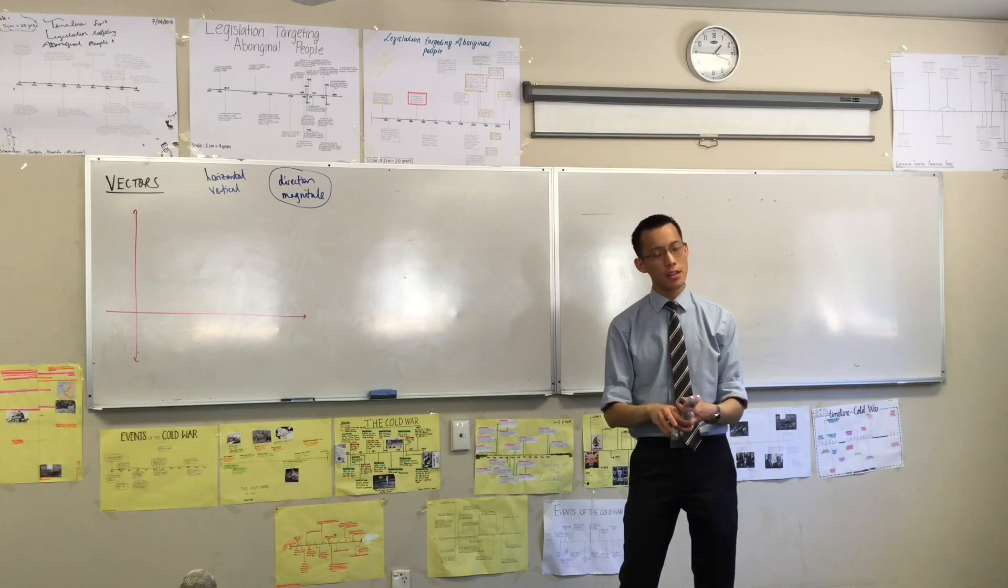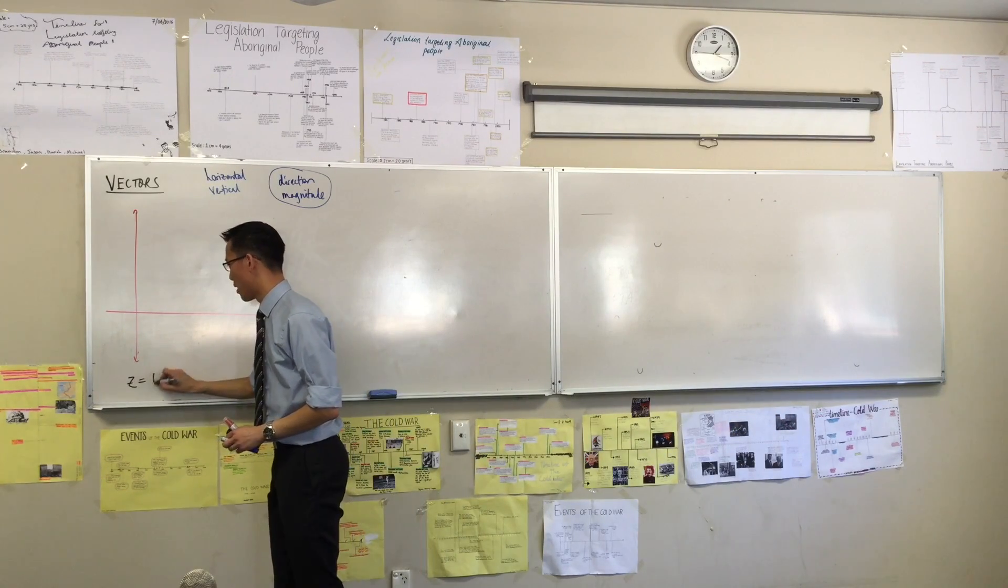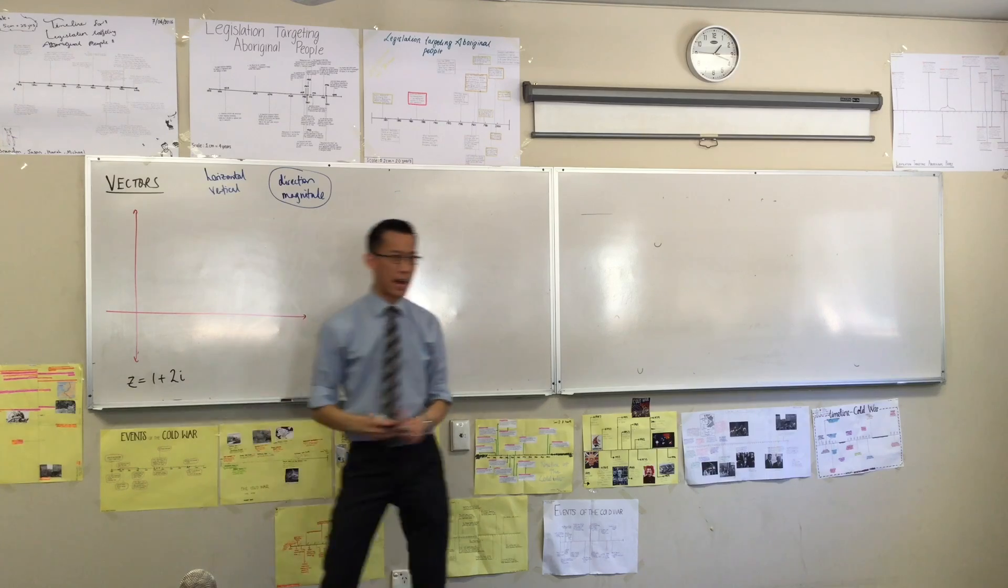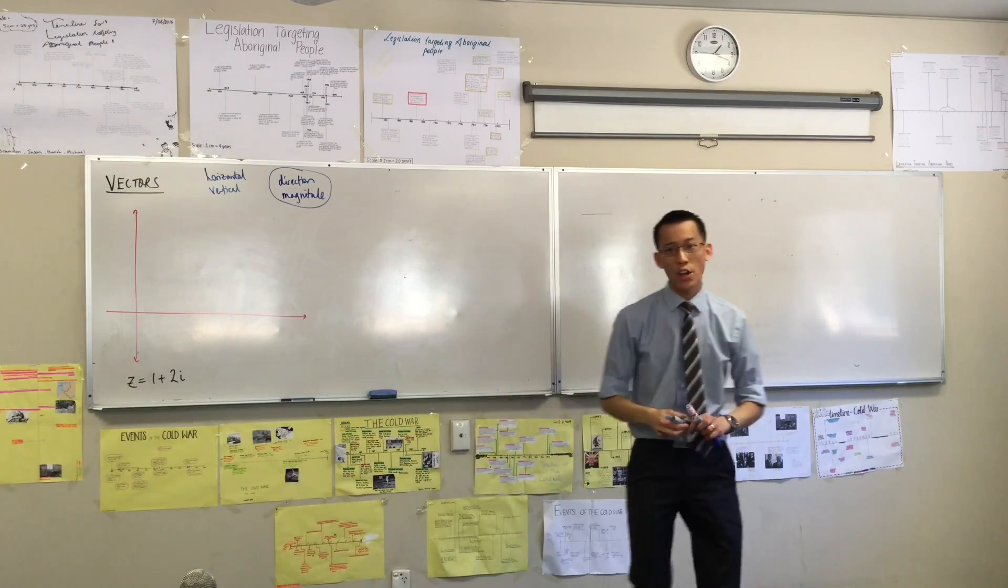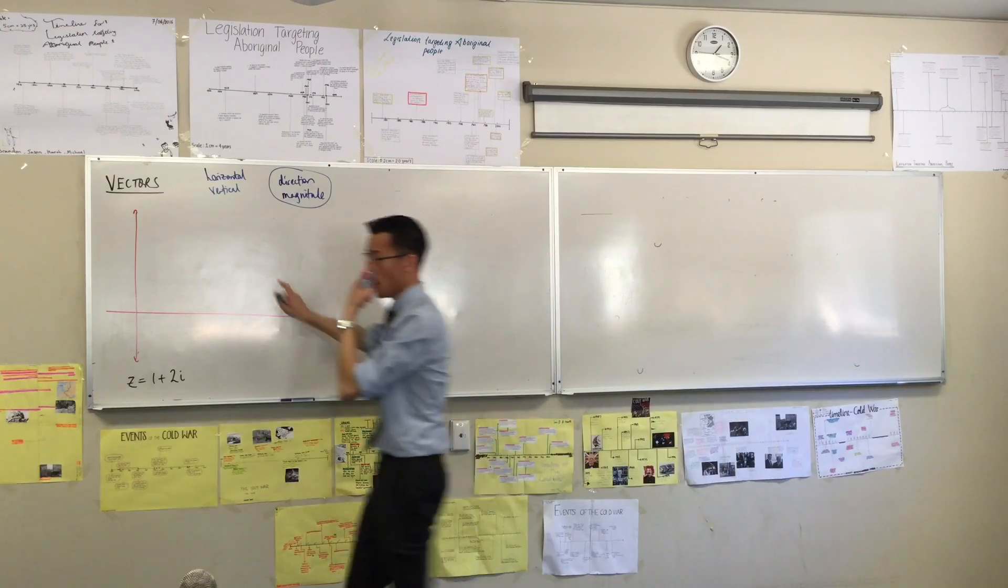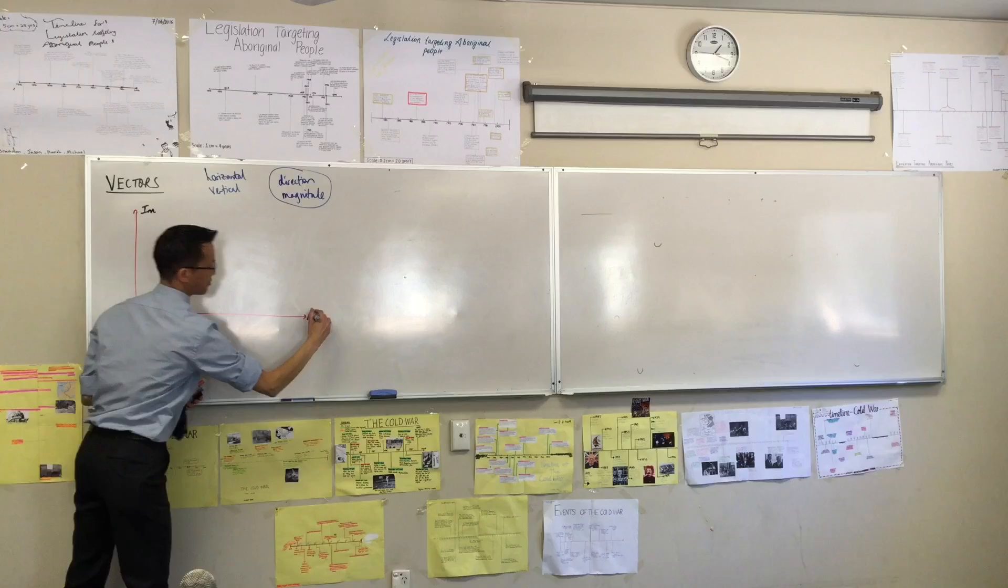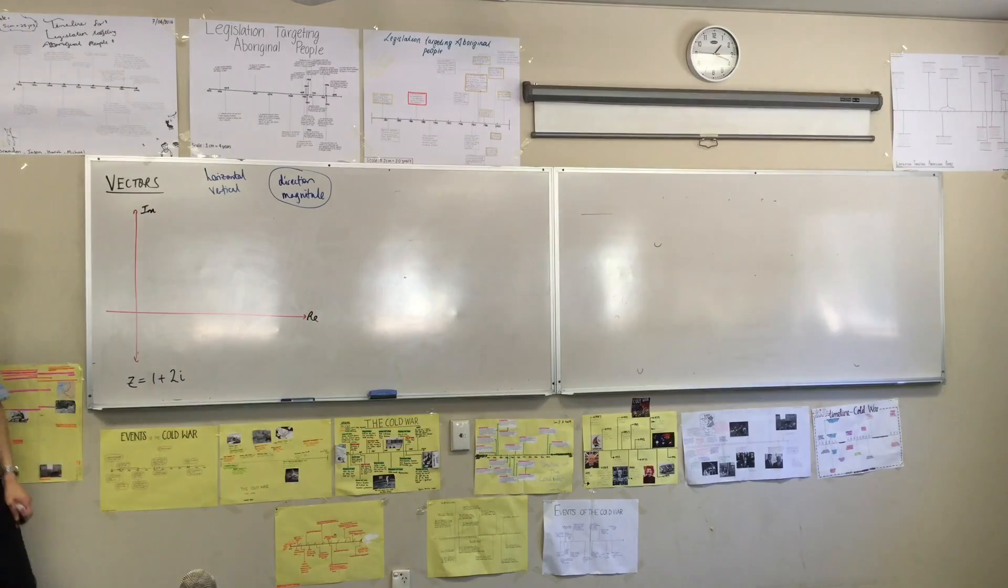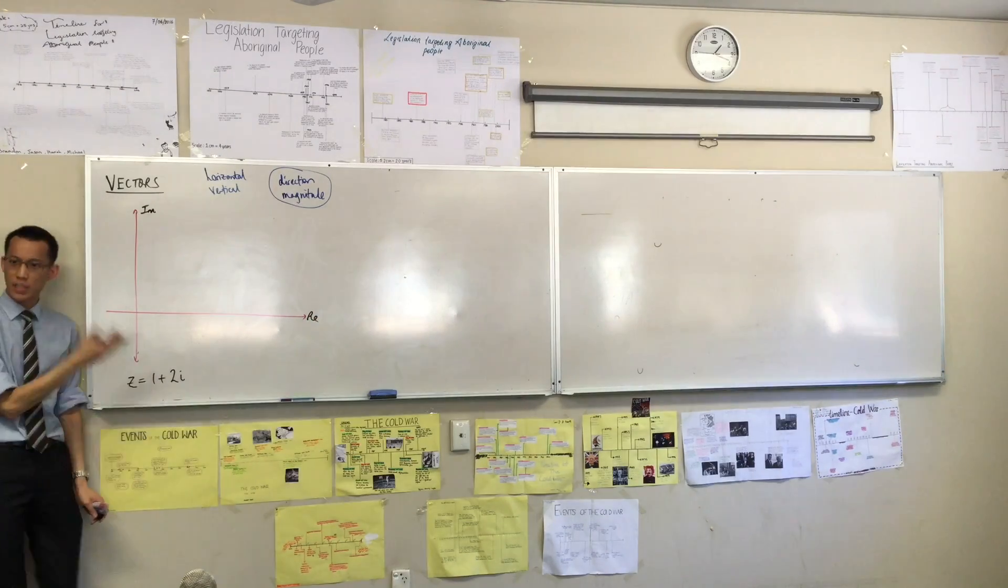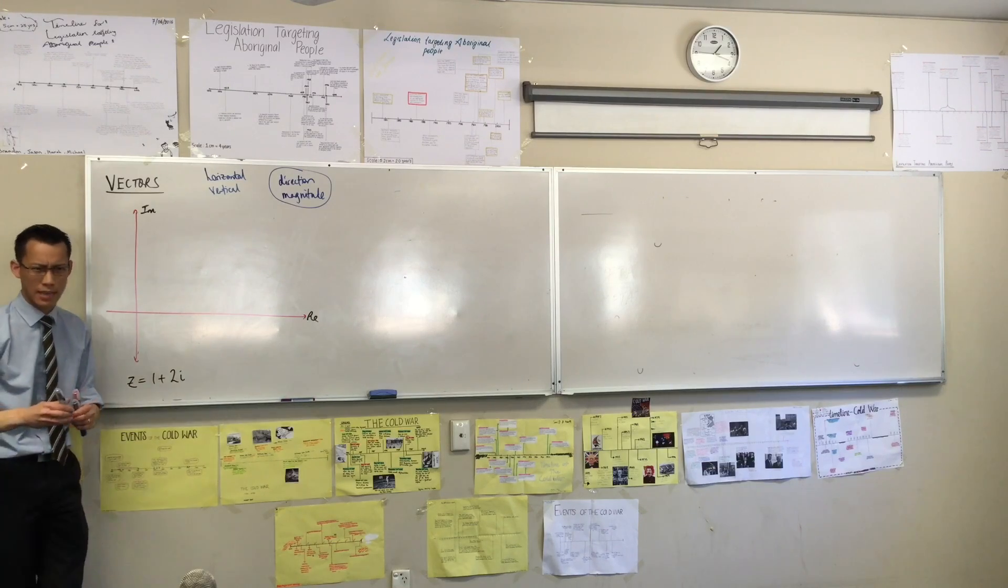Now I want you to consider the complex number, in fact we'll just write it down here. Consider the complex number 1 plus 2i. Now we already know we can represent this in a bunch of ways. For instance, on this guy, the complex plane, I could call this the imaginary axis, this the real axis, and I could say there's a point on this plane that represents 1 plus 2i. Let's put some scale on here.